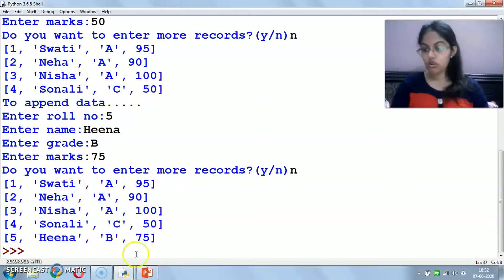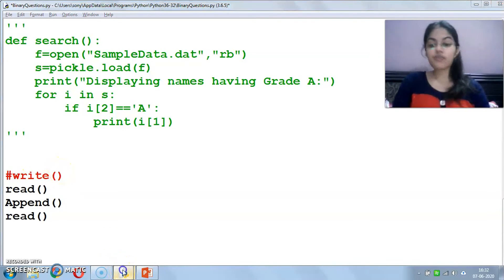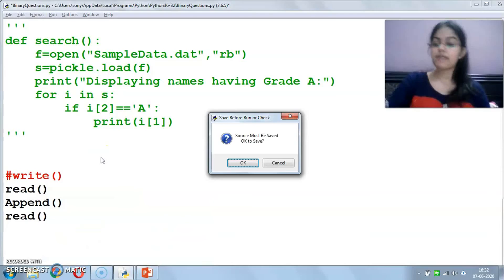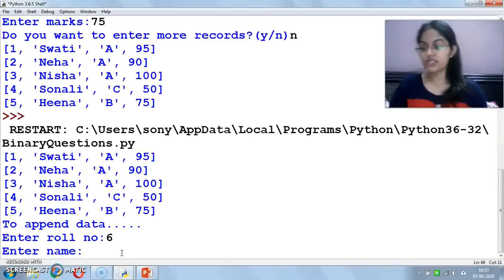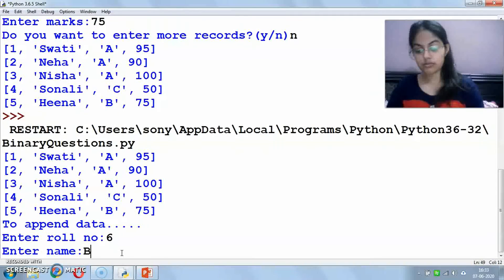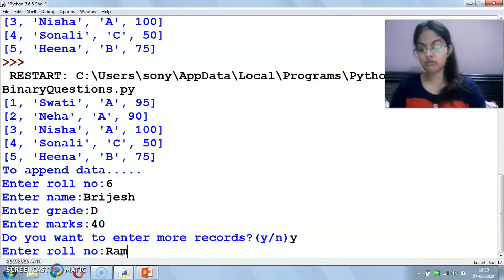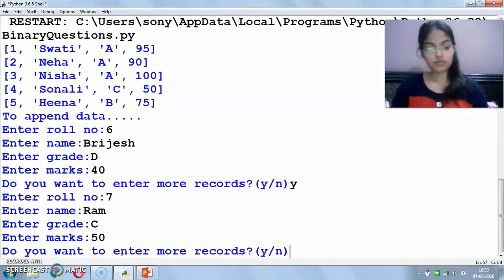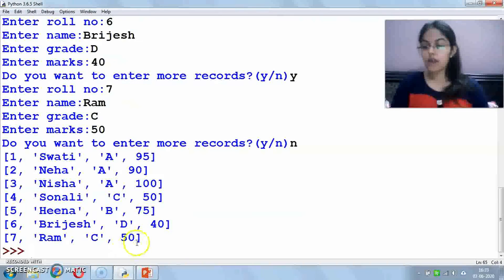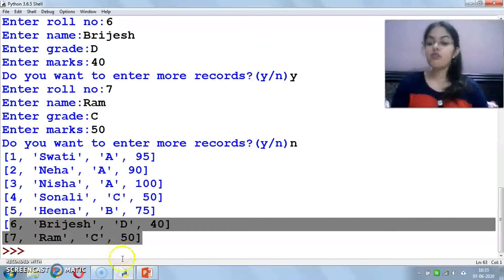Now if I execute it again, I will not call the write function. My file already has 5 records, so I will append again. When we execute again, 5 records are already in file. Now I will enter roll number 6, name Priyesh, grade D, marks 40. Enter more records? Yes. Roll number 7, name Ram, grade C, marks 50. Do you want to enter more records? No. Now there were already 5 in the file, so what happened? These 2 records which I have now appended are displayed.